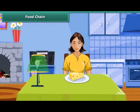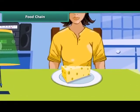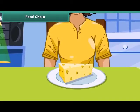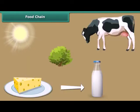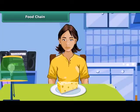It is breakfast time. Rhea is relishing a cheese cube. She decides to trace the cube back to where it originated. The cheese cube comes from milk, and the milk from the cow. The cow eats plants. Plants produce their food with the help of sunlight. Rhea has just traced the food chain.